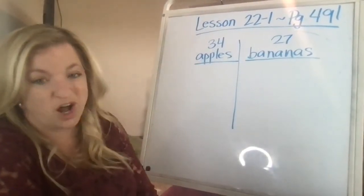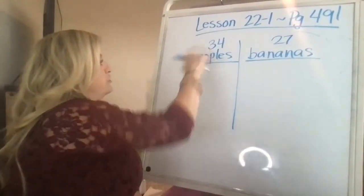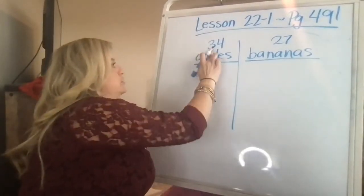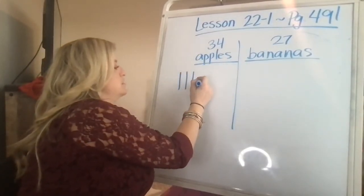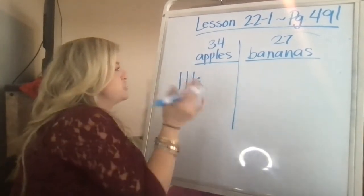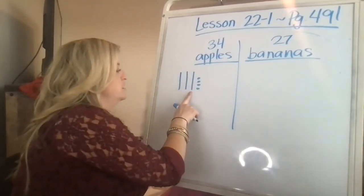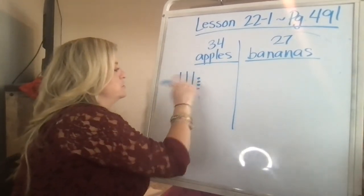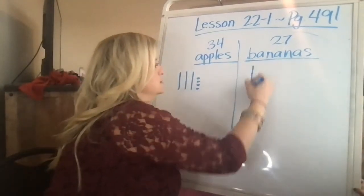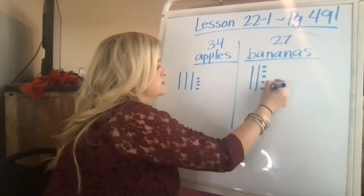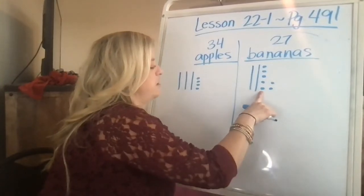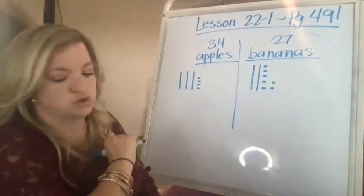Compare the number of fruits. So I'm going to draw them in base 10. I'm going to draw 34. I know it's three tens and four ones. One, two, three, four. Now I'm going to check and make sure I got it right. 10, 20, 30, 31, 32, 33, 34. 27 bananas. Two tens. One, two, three, four, five, six, seven, 10, 20, 25, 26, 27. 27 bananas. Awesome.